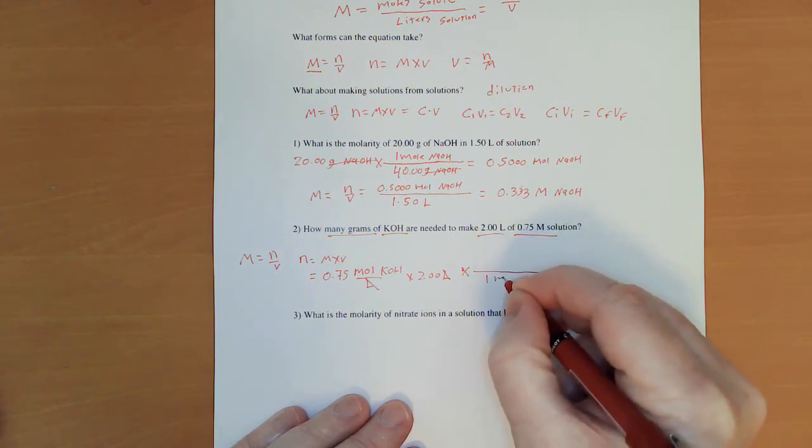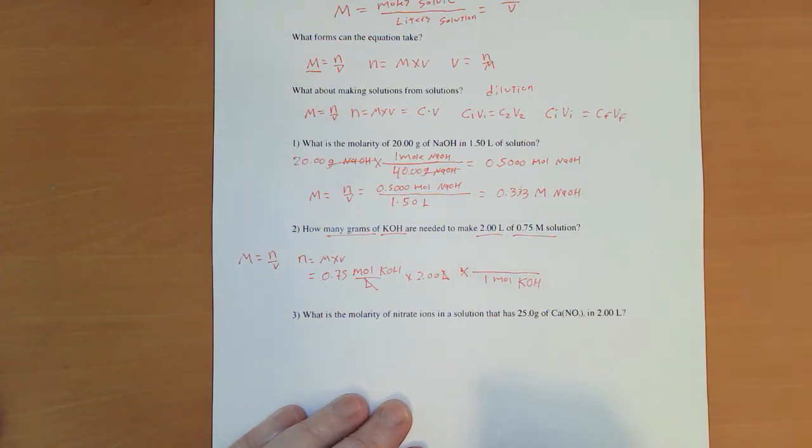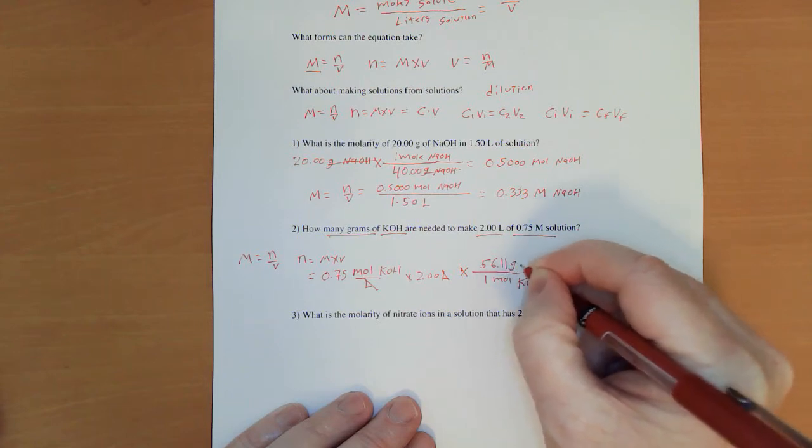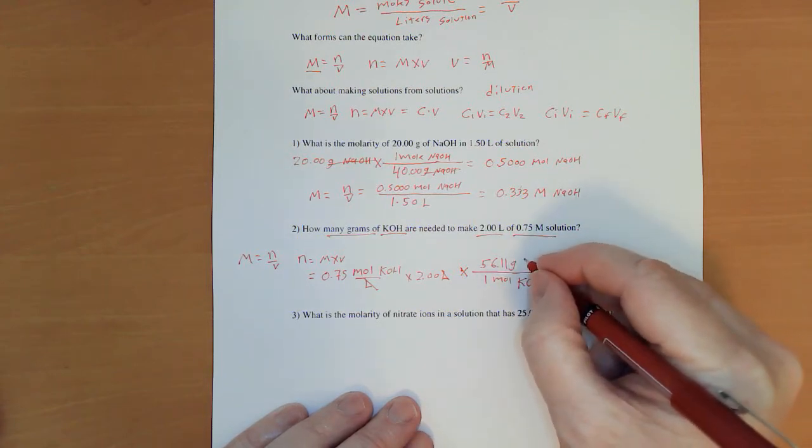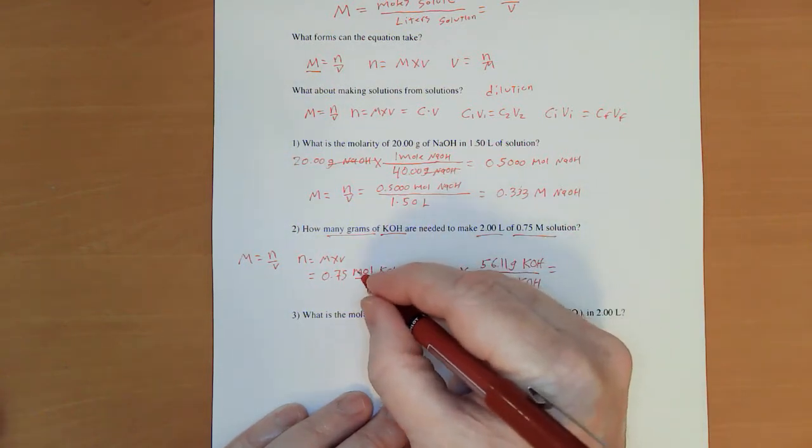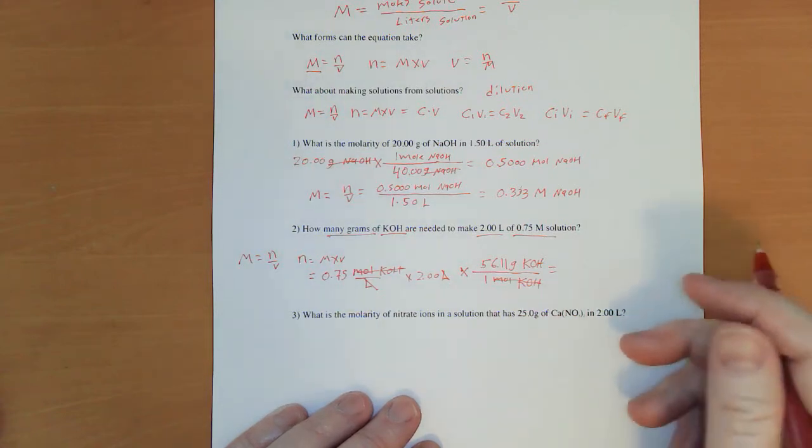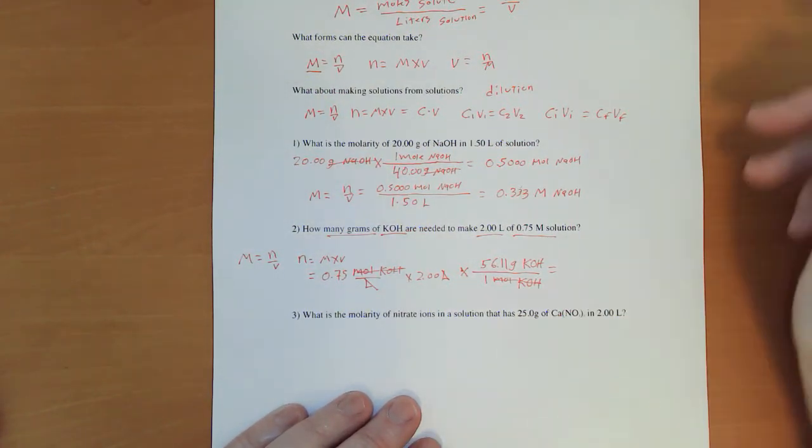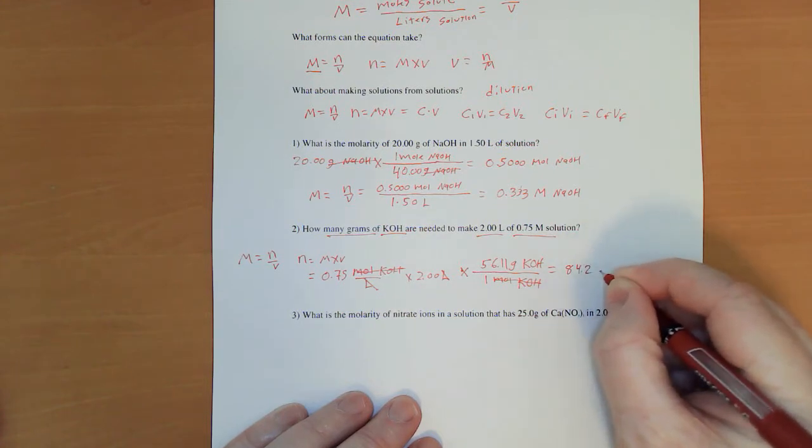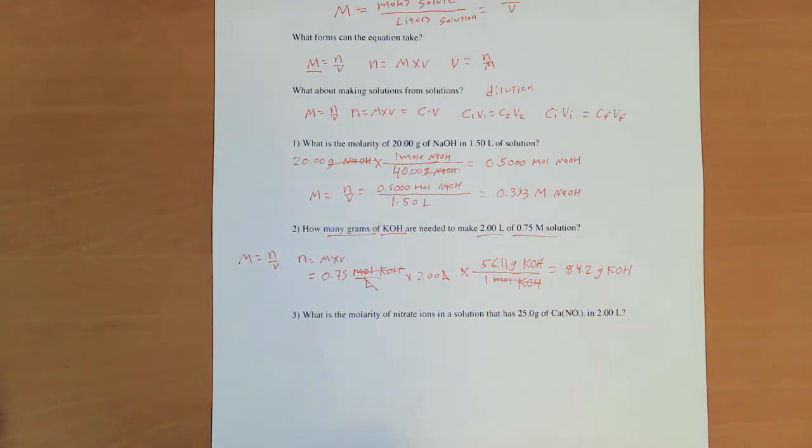So now I can say one mole of KOH. Now I need a molar mass for KOH. It's one that I happen to remember, but you just use your periodic tables and add them up. 56.11 grams of KOH. KOH cancels. Now, I already ran this through my calculator and got 84.2 grams of KOH.